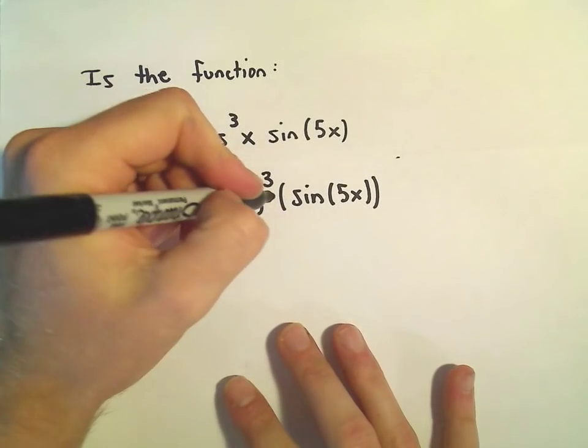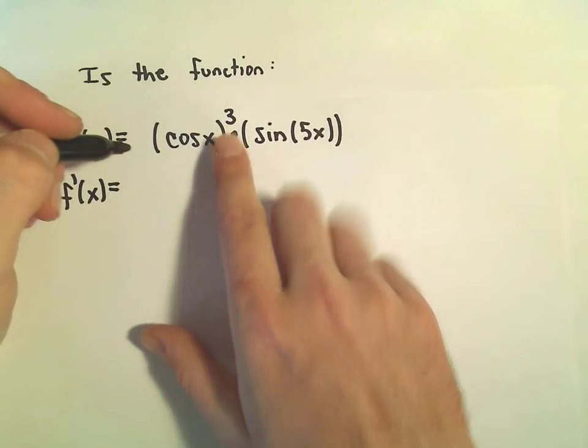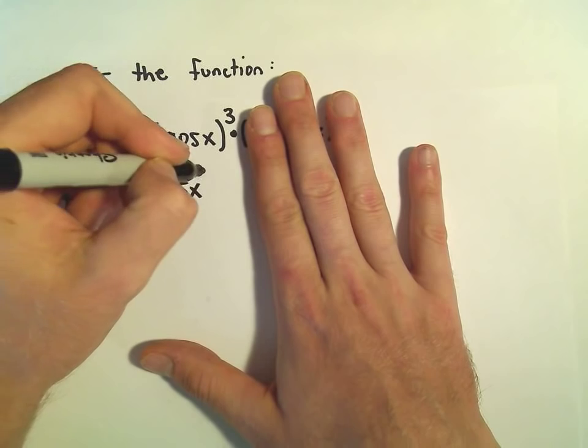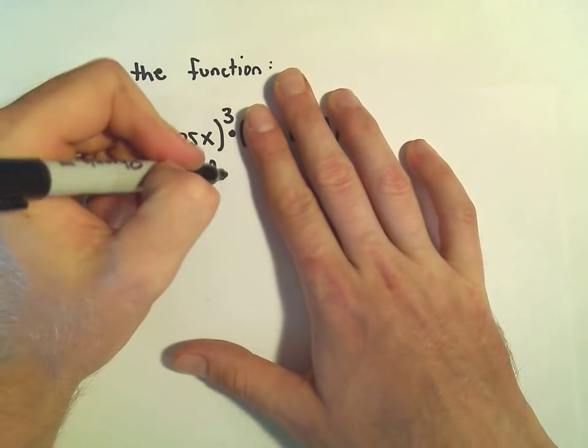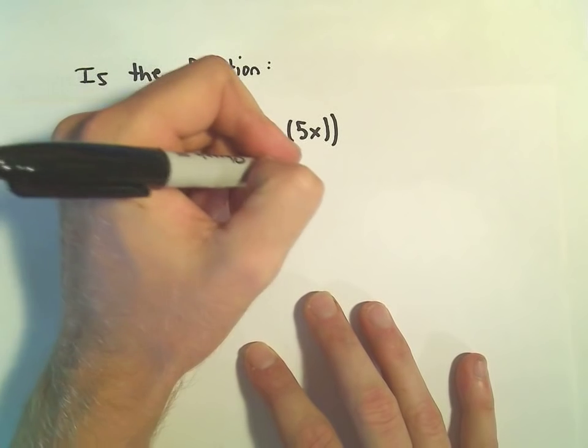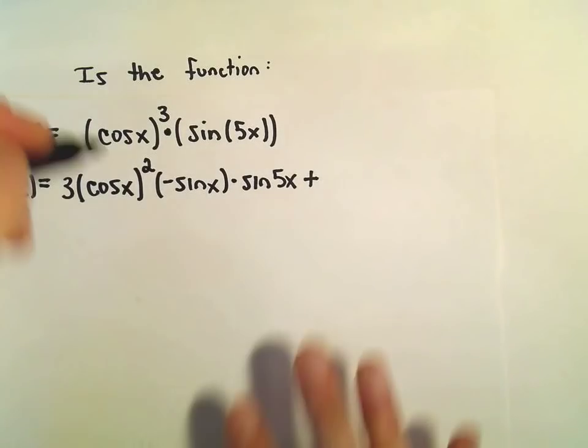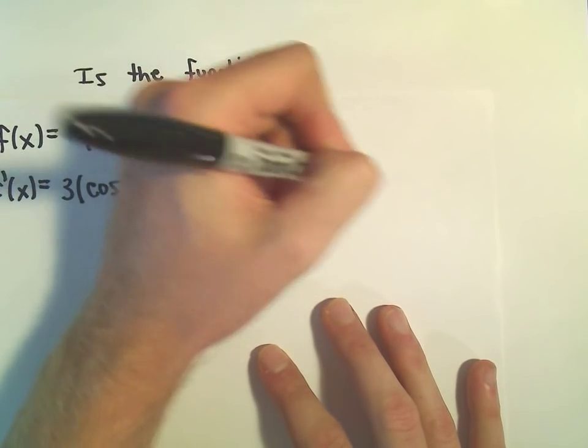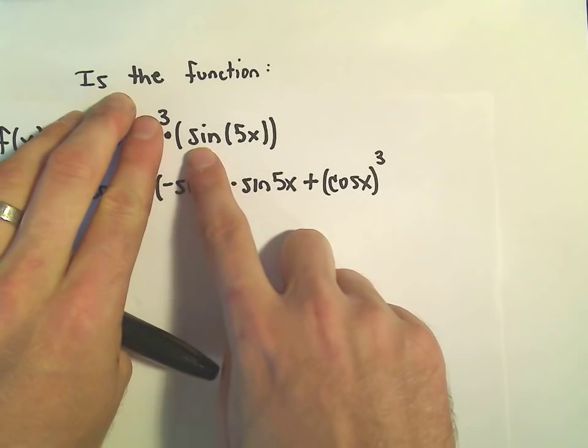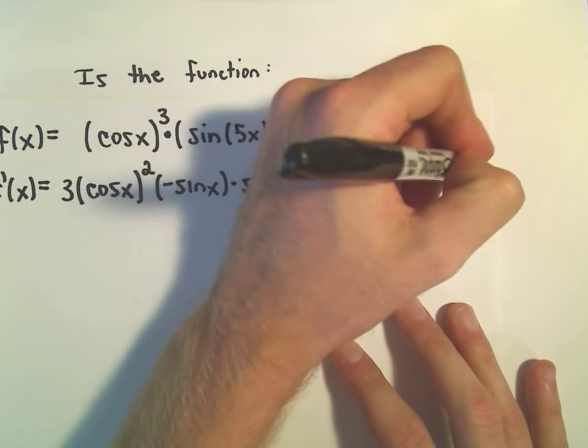So the first thing I'm going to do is the product rule. That's kind of the first thing that I think about. So let's do the derivative of cosine x cubed. The three would come out front. We would leave the inside alone, take one away. And then we have to take the derivative of the inside, which would be negative sine x. And then I'm going to leave the sine of 5x alone. So then we have a plus for our product rule. Now I'm going to leave the cosine of x cubed alone. The derivative of sine 5x, we'll have to use the chain rule again. The derivative of sine is cosine. And then we have to take the derivative of the inside, so that'll be times 5.